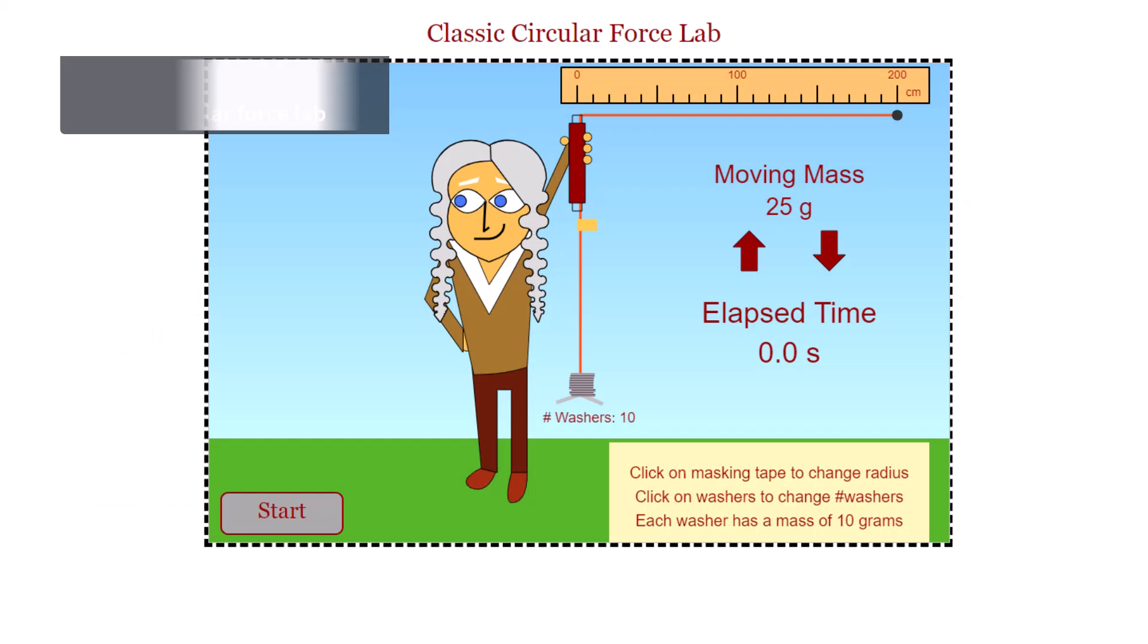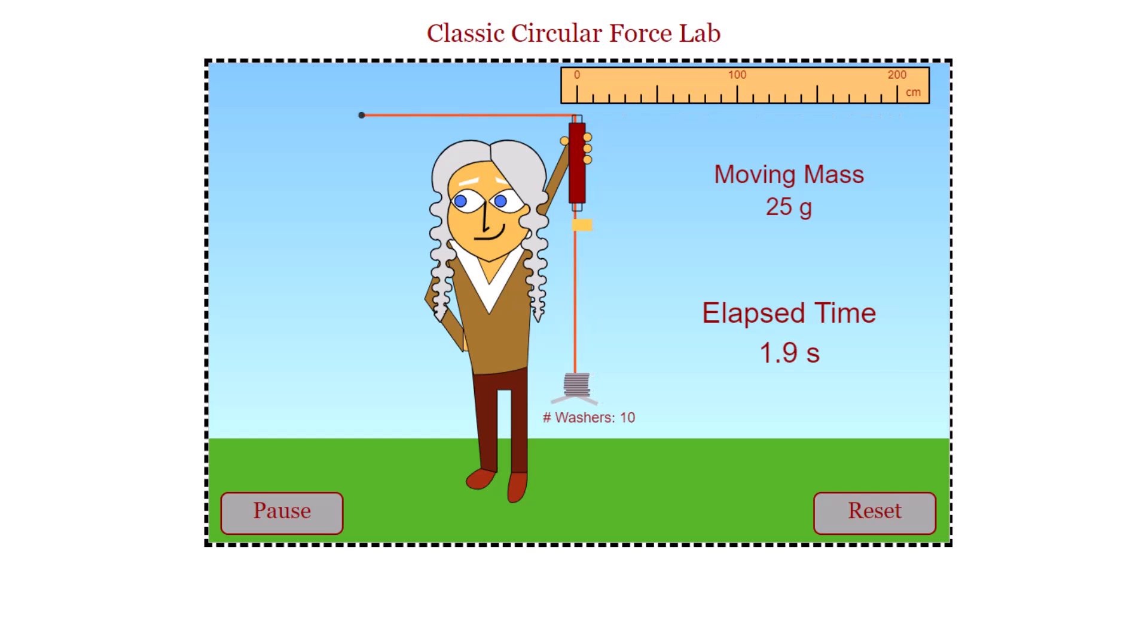The following visual also shows a good representation of this experiment. We have a mass on the end of a string at a fixed radius spinning in a circle, the centripetal force of which is balanced out by the weight force or the force due to gravity of the attached washers. Let's see how this simulation works. Here's our circular motion.